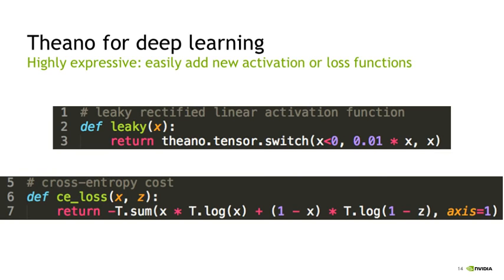It's very easy to add new activation or loss functions — much like adding any other Python function. Here I have an example of adding a leaky rectified linear activation function: that's X times 0.01 for X less than 0, or X otherwise. The Theano.Tensor.Switch function applies that activation element-wise to tensors, so the X input can be a whole array of neuron activations. Similarly, we can easily add new loss functions — here the cross-entropy loss is added, again much like any other Python function.